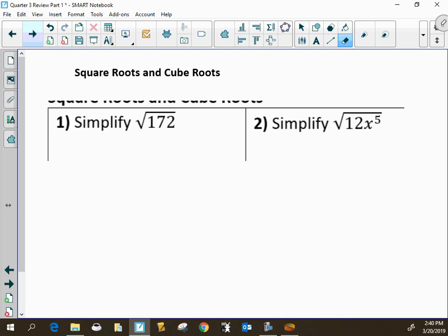For this first problem, there are a couple different ways you can attack this problem. Some teachers will teach you to hunt for perfect squares, and you would say this is 4 times 43, which is 2 times the square root of 43.